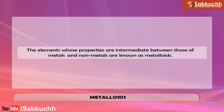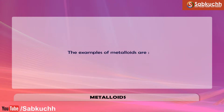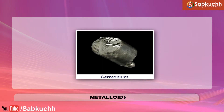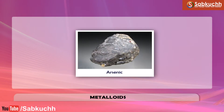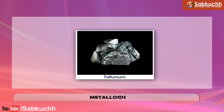Metalloids. The elements whose properties are intermediate between those of metals and non-metals are known as metalloids. The examples of metalloids are silicon, germanium, arsenic and tellurium.